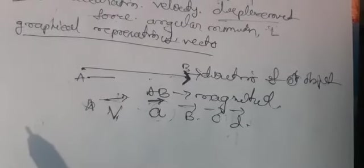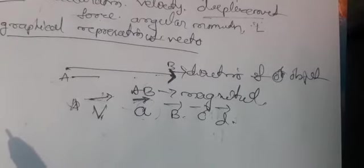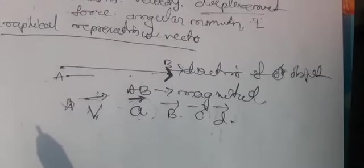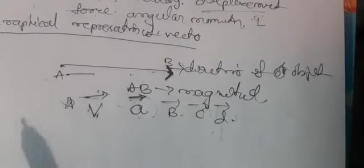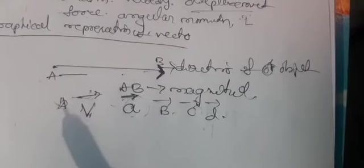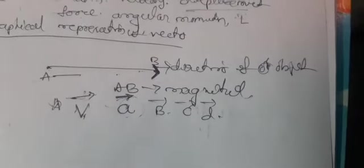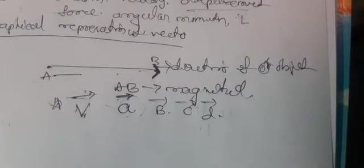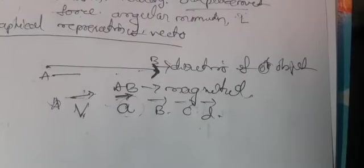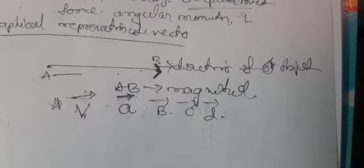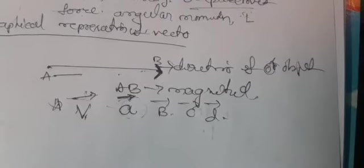The fifth point: a scalar does not involve dot product, cross product, or the determinant method of multiplication. A vector, however, does explain the dot product and cross product of any two vectors. This is the difference between scalar and vector. The next concept is the types of vectors.